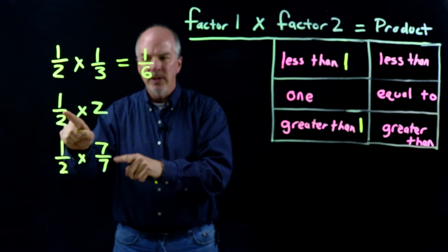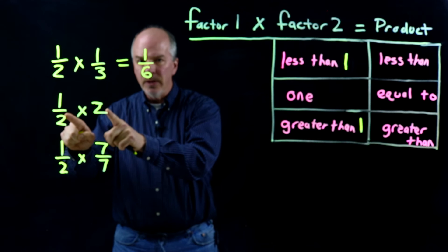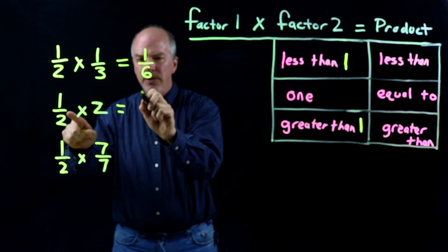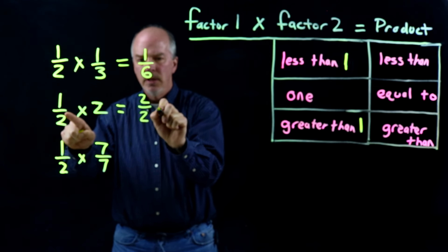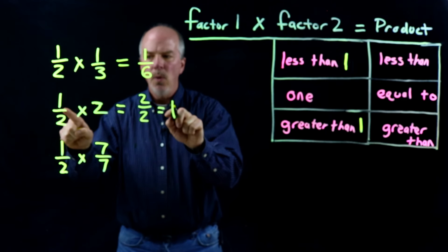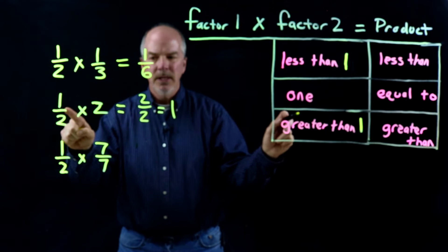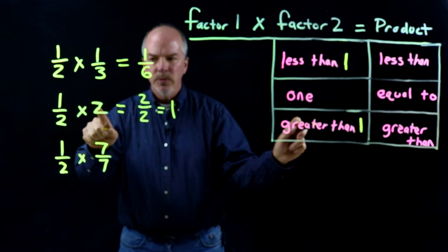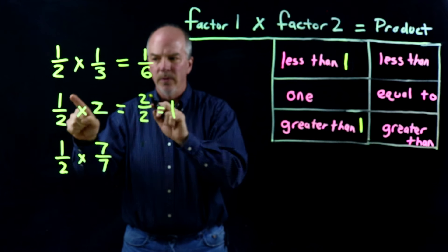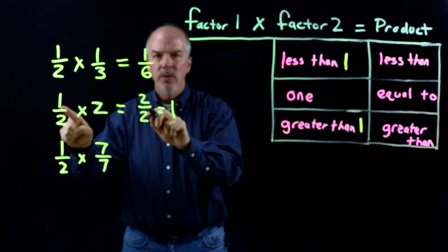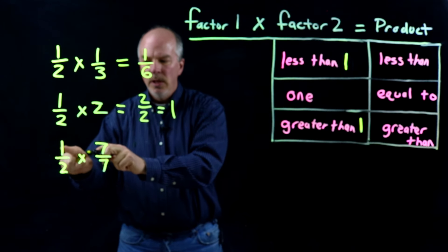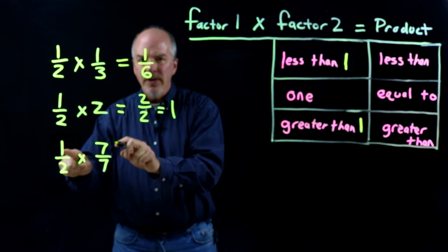Let's use that same first factor of 1 half and multiply it by something greater than 1, which is 2. When we do that, we get 2 over 2, which is 1. So we went from 1 half to 1. If we multiply by something greater than 1 — which was 2 — we're going to be greater than what we started with. We went from 1 half to 2 over 2, which is 1.